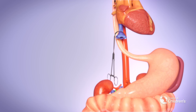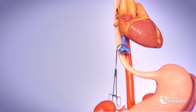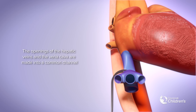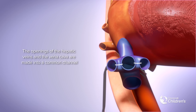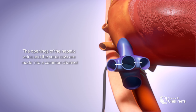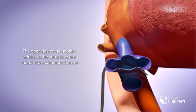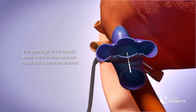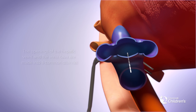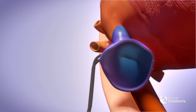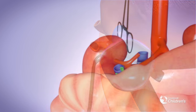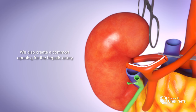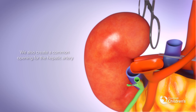In preparation for the vascularization of the to-be-transplanted liver, the openings of the hepatic veins and the vena cava are made into a common channel. This maximizes the outflow of the to-be-transplanted liver blood flow. We also create a common opening for the hepatic artery.